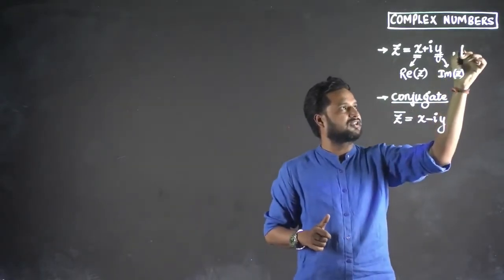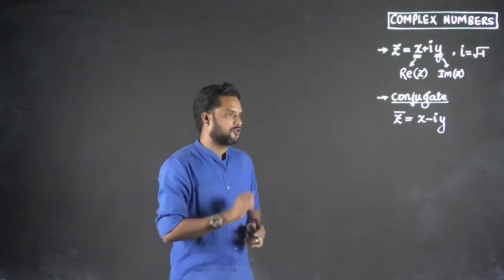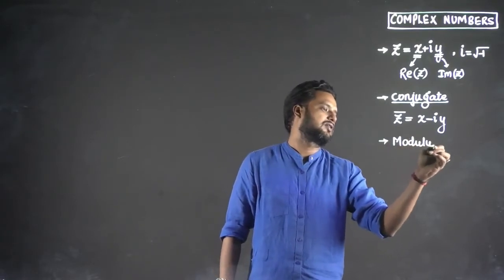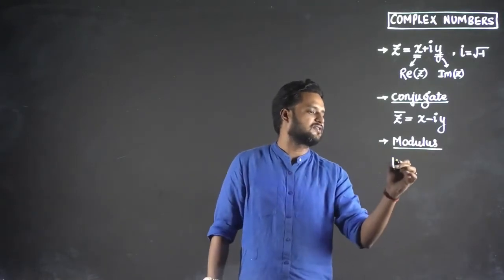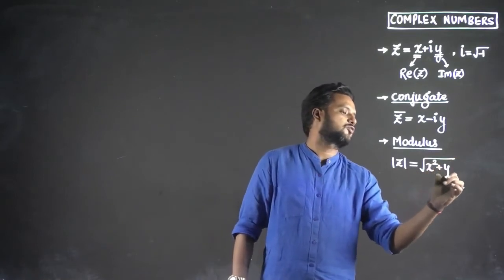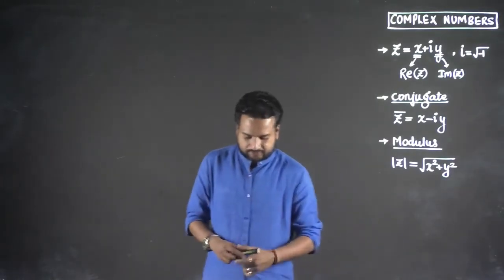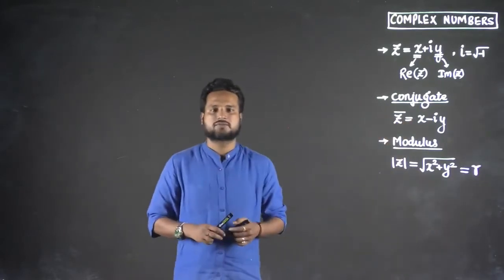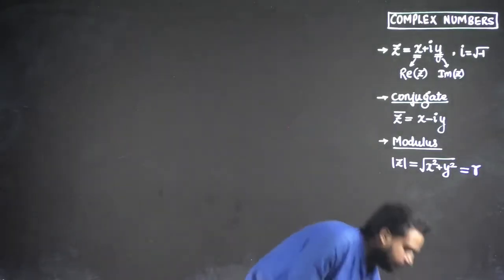So if this is conjugate, what else do we need to know in complex numbers? The other one is modulus. What is modulus? Modulus is nothing but mod of z, and it is given by the square root of x squared plus y squared. We also write it as r. This is another representation — you can represent it as small r.